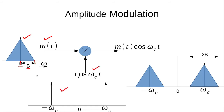The Fourier transform of the carrier cos(omega_c * t) can be represented in the frequency domain by two impulses: the first one located at minus omega_c and the second one located at plus omega_c.